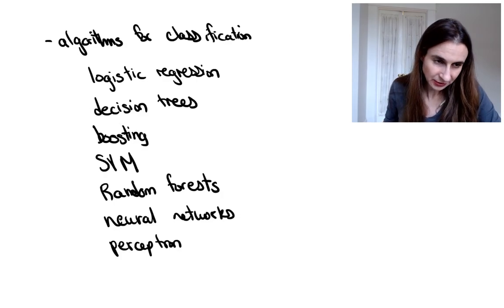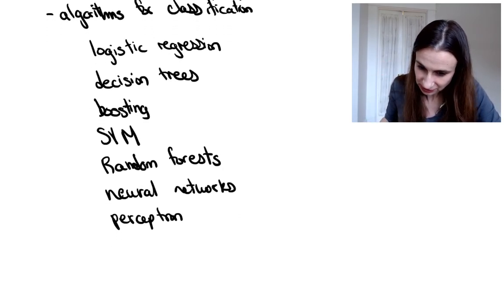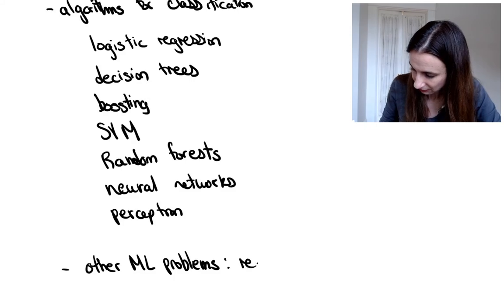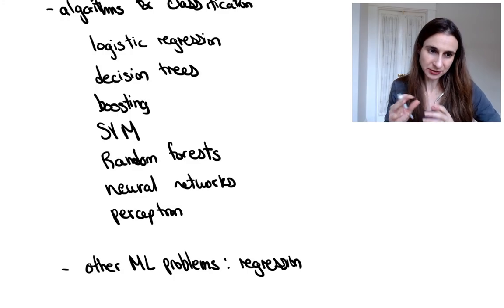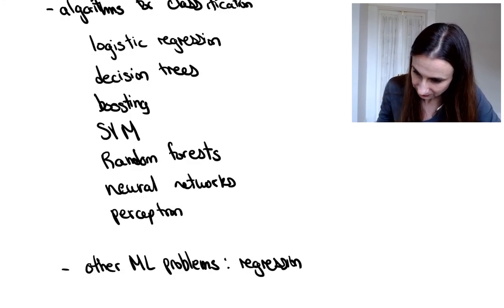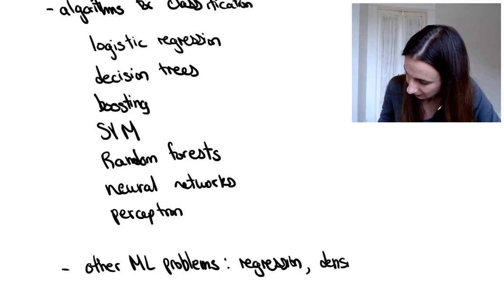And then I also want to, I don't want you to think that the world ends with classification. There's actually a lot of other machine learning problems. So regression. Regression is where the labels, instead of being plus or minus one, in regression, the labels are real valued. So they're numerical. Density estimation.